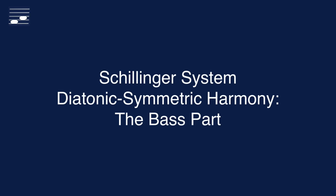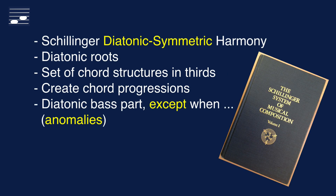Hello! In this tutorial on Schillinger diatonic symmetric harmony, the focus is on the bass part. For this type of harmony in the Schillinger system we use diatonic roots and a set of chord structures and thirds. These chord progressions are characterized by a diatonic bass part and altered notes in the upper harmony layer. However, in some cases the bass part also contains non-diatonic notes. In this video I will discuss the occurrence of such anomalies and how they affect the harmonic texture.